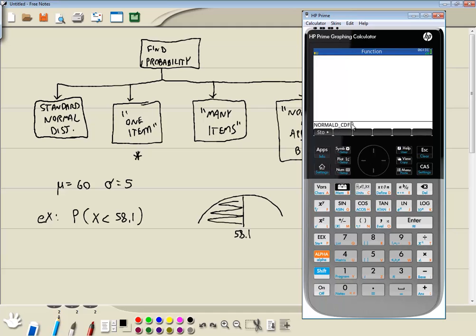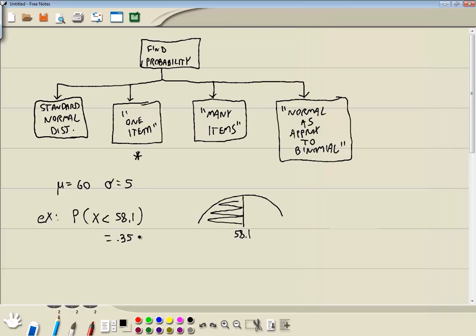Now our parameters for this is the mean, standard deviation, and then X. So our mean we said was 60, comma, our standard deviation which is 5, comma, X which is 58.1. And that's X assuming we're looking at the area to the left. And then I'll press enter. Okay, so that gives us .35, rounded to four decimal places, that's seven, so it rounds up. So .3520. And that would be our answer.